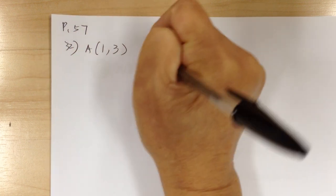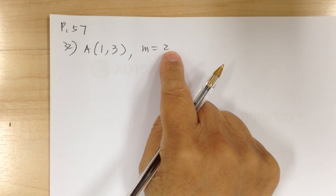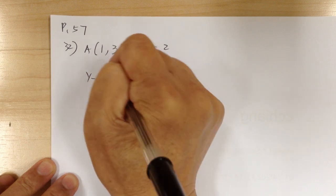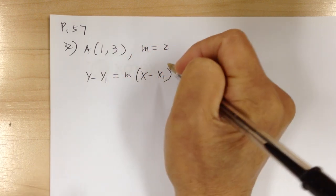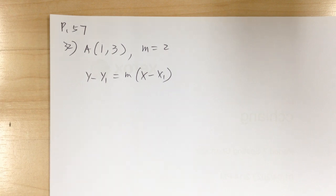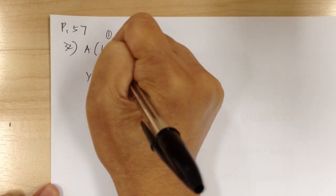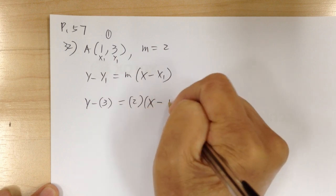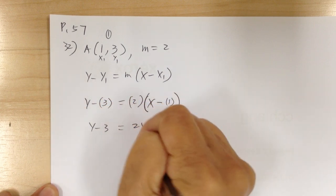Number 32 — actually this turns out to be number 30: point (1, 3) and slope equals 2. Since you have a point and a slope, use the point-slope form: y minus y1 equals m times (x minus x1). Substituting, y minus 3 equals 2 times (x minus 1). Distributing gives y minus 3 equals 2x minus 2.